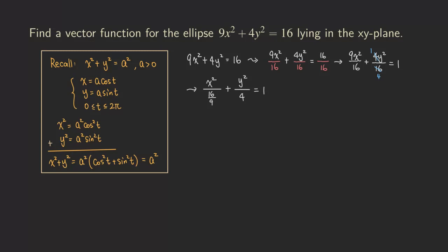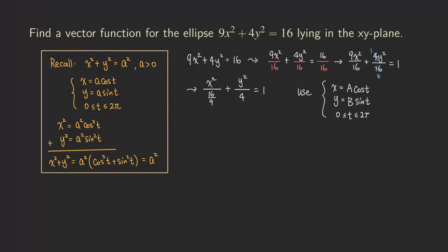Now we use the parameterization. The parametric equations we're going to use have x equal to capital A cosine of t and y equal to capital B sine of t, where t goes from 0 to 2 pi. The question is: what should A and B be? All we need to do is plug those back into our equation and find A and B. Let's plug x equals A cosine t and y equals B sine t into the standard ellipse equation.